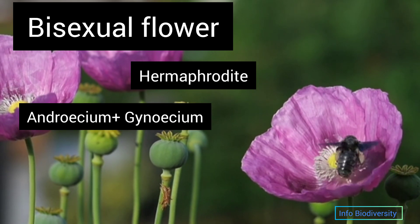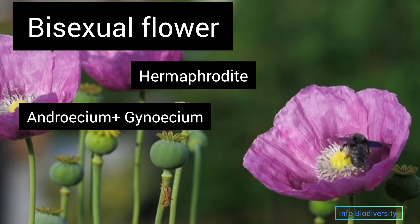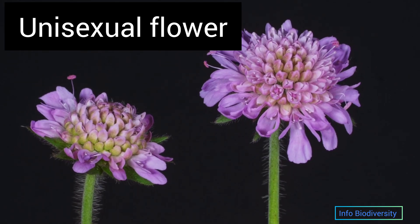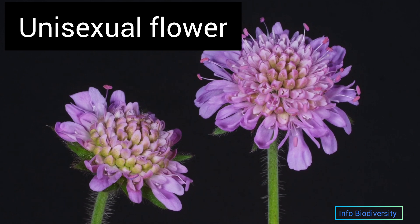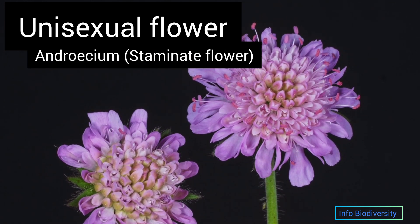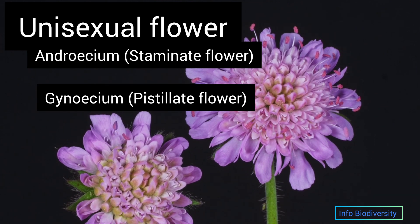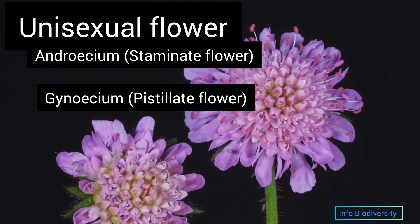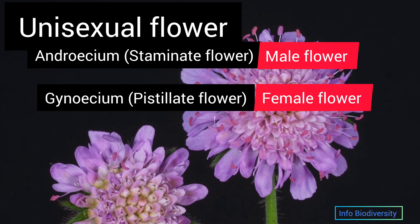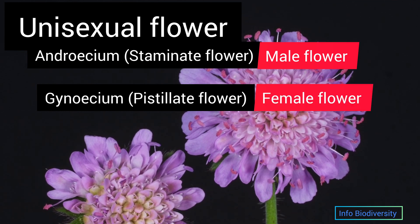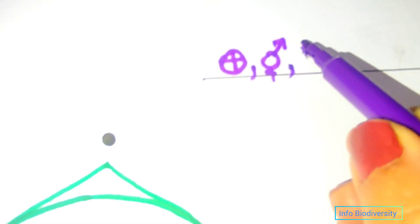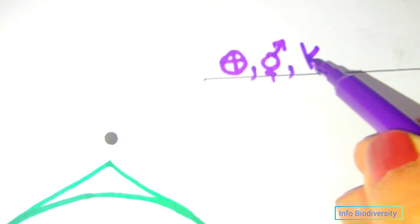Unisexual flowers are those where only one part is present: if only androecium is present, it is called a staminate flower; if only gynoecium is present, it is called a pistillate flower. That is, the male flower and female flower are separate, based on the presence of androecium and gynoecium.